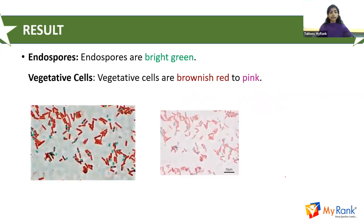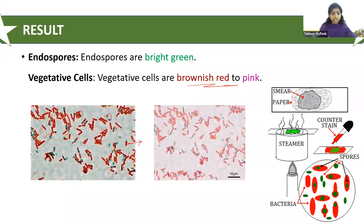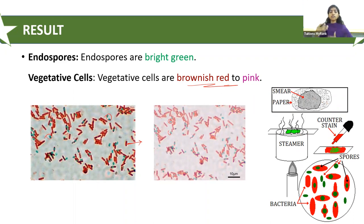The microscopic result shows endospores stained bright green, and vegetative cells stained brownish-red or pink. The spores may be located in the middle of the cell, at the end, or towards one end, depending on the organism. Spore shape may also be diagnostic — spores can be either spherical or elliptical. This is how spore formers can be identified and distinguished from non-spore formers.